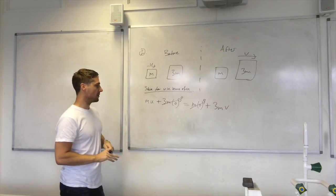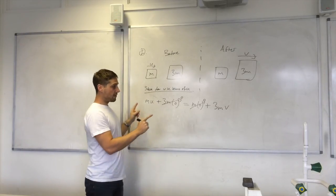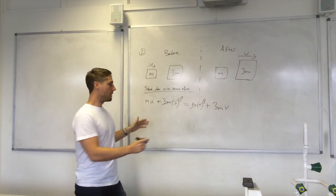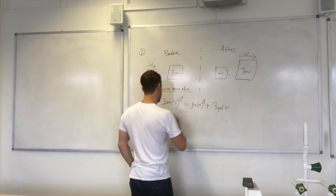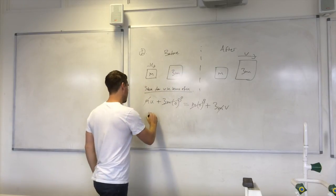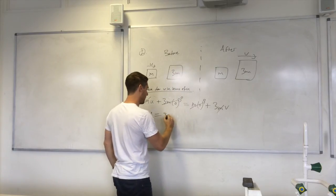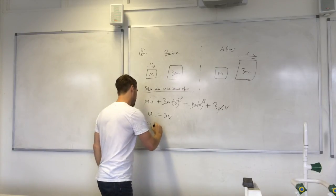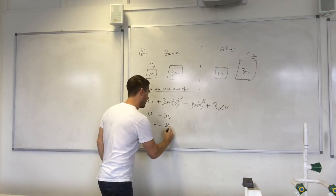And we can also cancel out m's, because if we divide both sides of the equation by m, then both these terms have m in them. So we get u equals 3v, and then v equals u divided by 3.